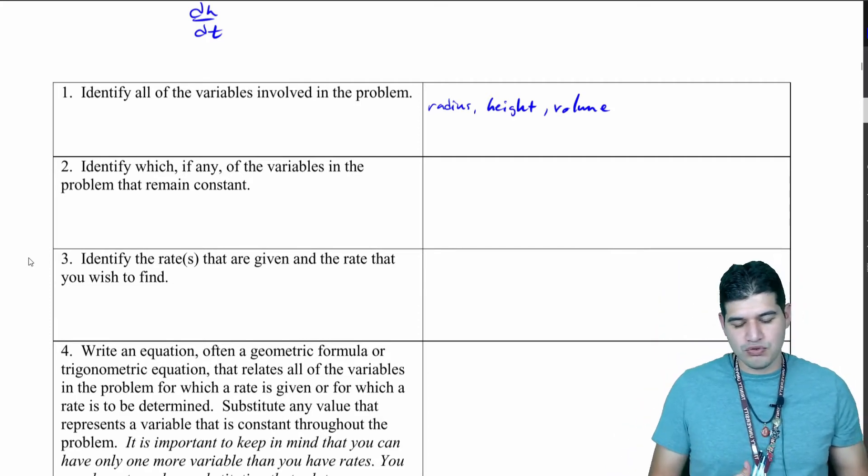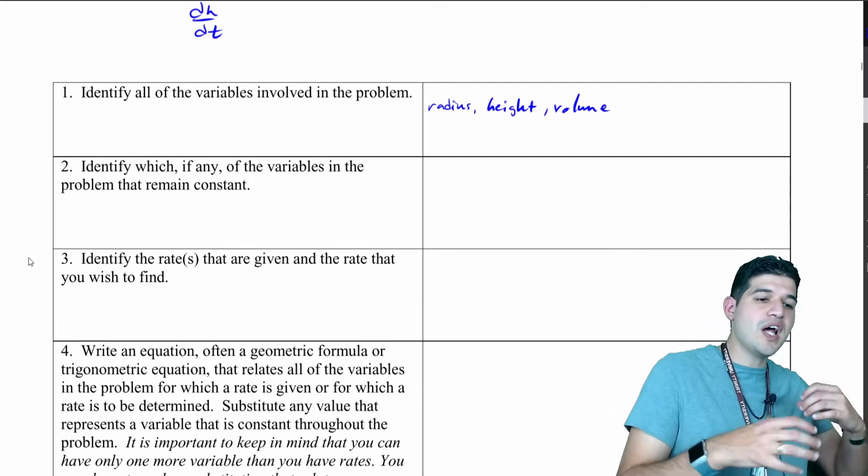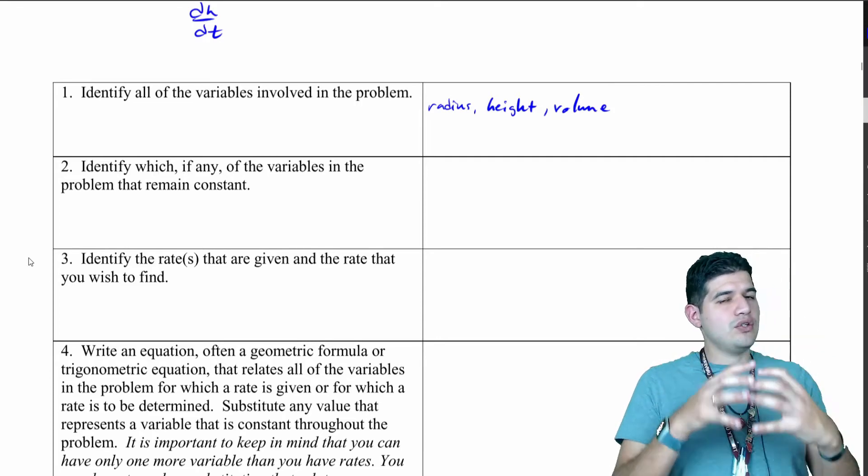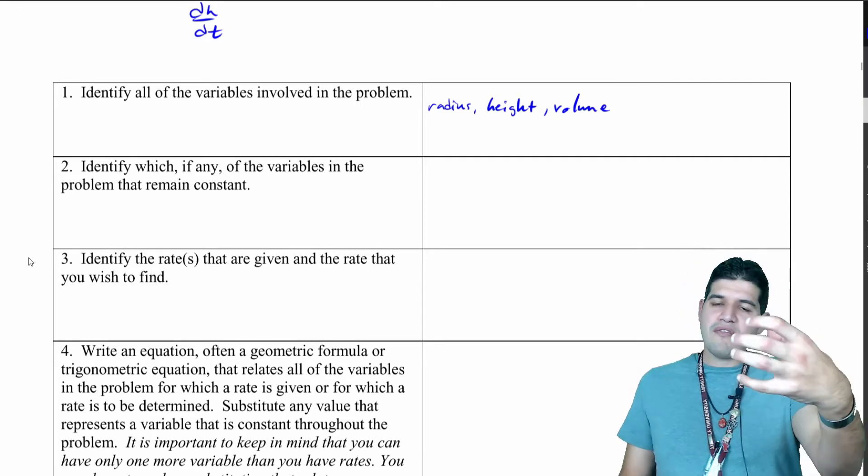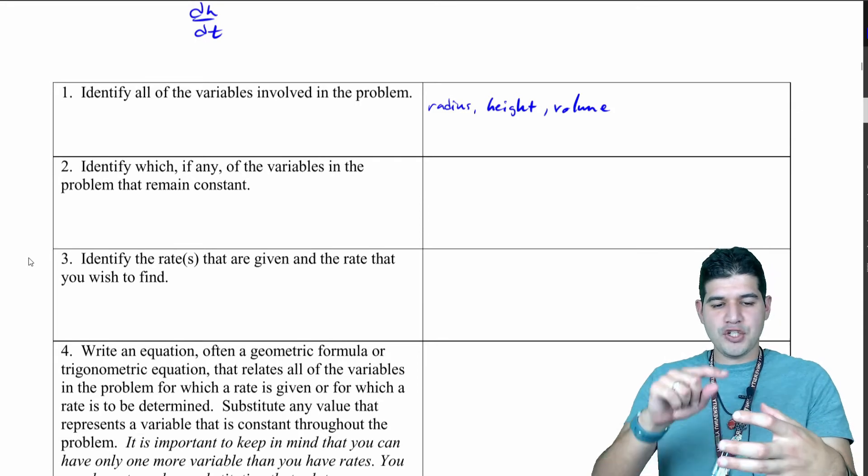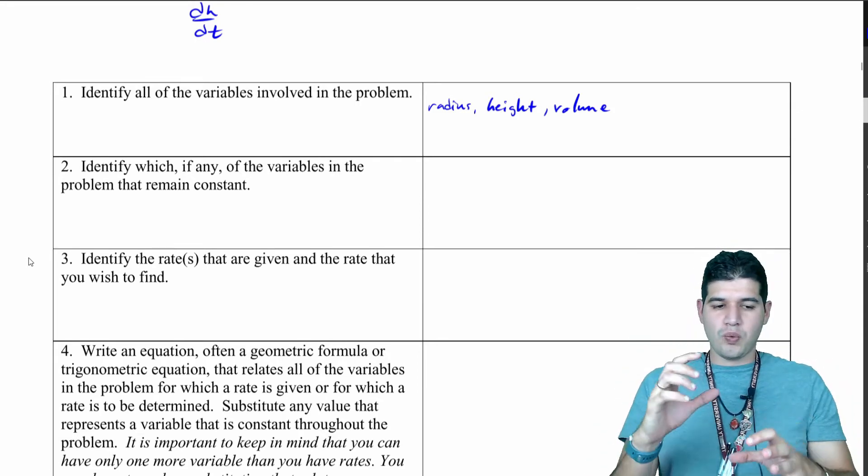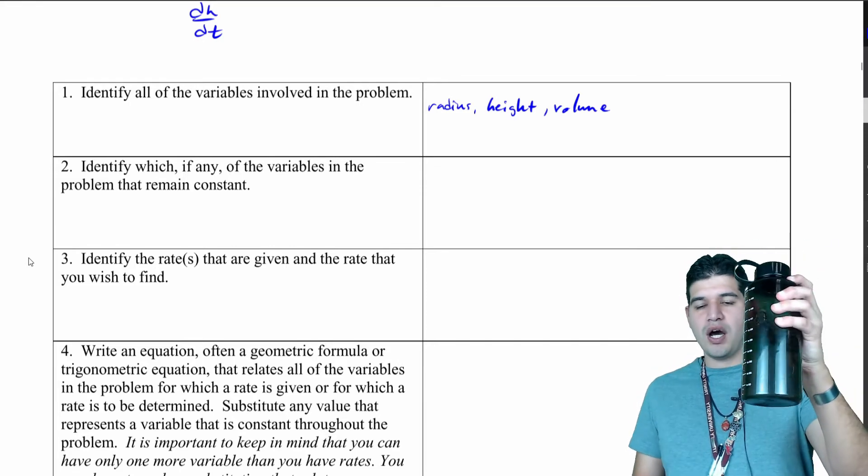Now identify which of any of the variables in the problem remain constant. You want to think about: put yourself in that situation and think critically. If you have a soda can and you're drinking the soda, if you've got some sort of bottle of water in the shape of a cylinder, as you start to drink that water down, does the radius of the can or the radius of that cylinder ever change?